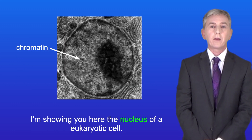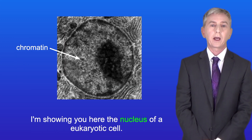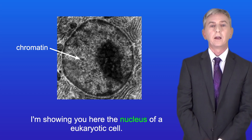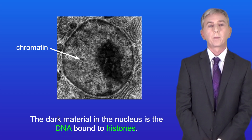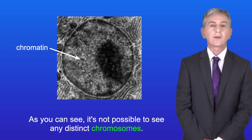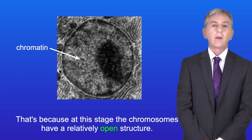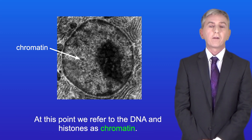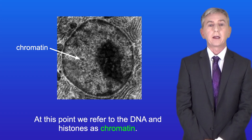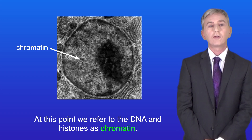Here I'm showing you the nucleus of a eukaryotic cell. The dark material in the nucleus is the DNA bound to histones. As you can see it's not possible to see any distinct chromosomes, because at this stage the chromosomes have a relatively open structure. At this point we refer to the DNA in histones as chromatin.